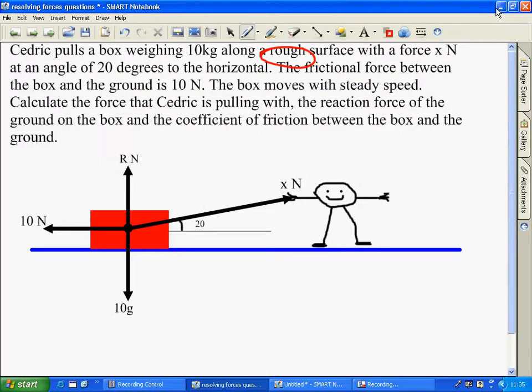Okay, this surface is rough, so there's a frictional force. Now, it moves with steady speed. That means sum of all the forces are zero.